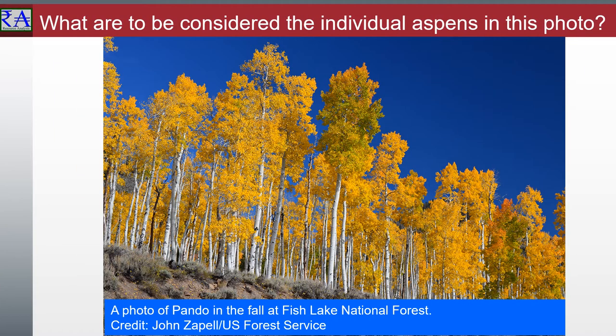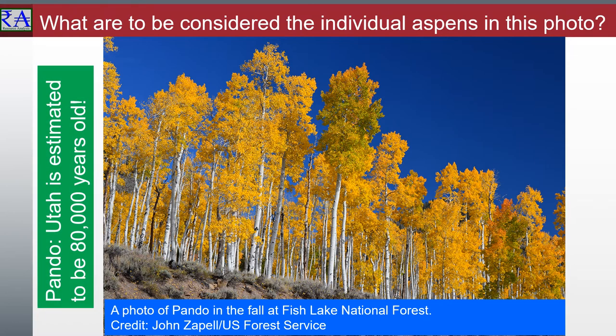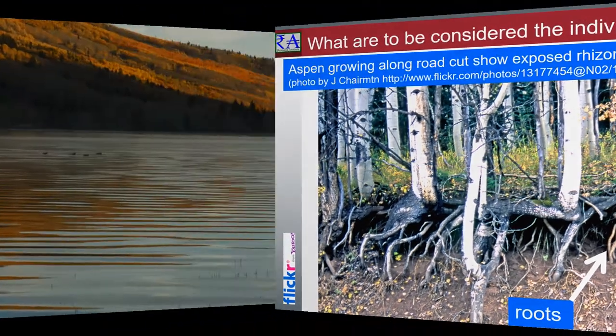In plants, parthenogenesis is a component process of apomixis. Rhizomes are continuously growing horizontally through underground stems, which put out lateral shoots and adventitious roots at intervals. In botany and dendrology, a rhizome is a modified subterranean plant stem that sends out roots and shoots from its nodes. Rhizomes are also called creeping rootstocks. They develop from axillary buds and grow horizontally underground, and retain the ability to allow new shoots to grow upwards.